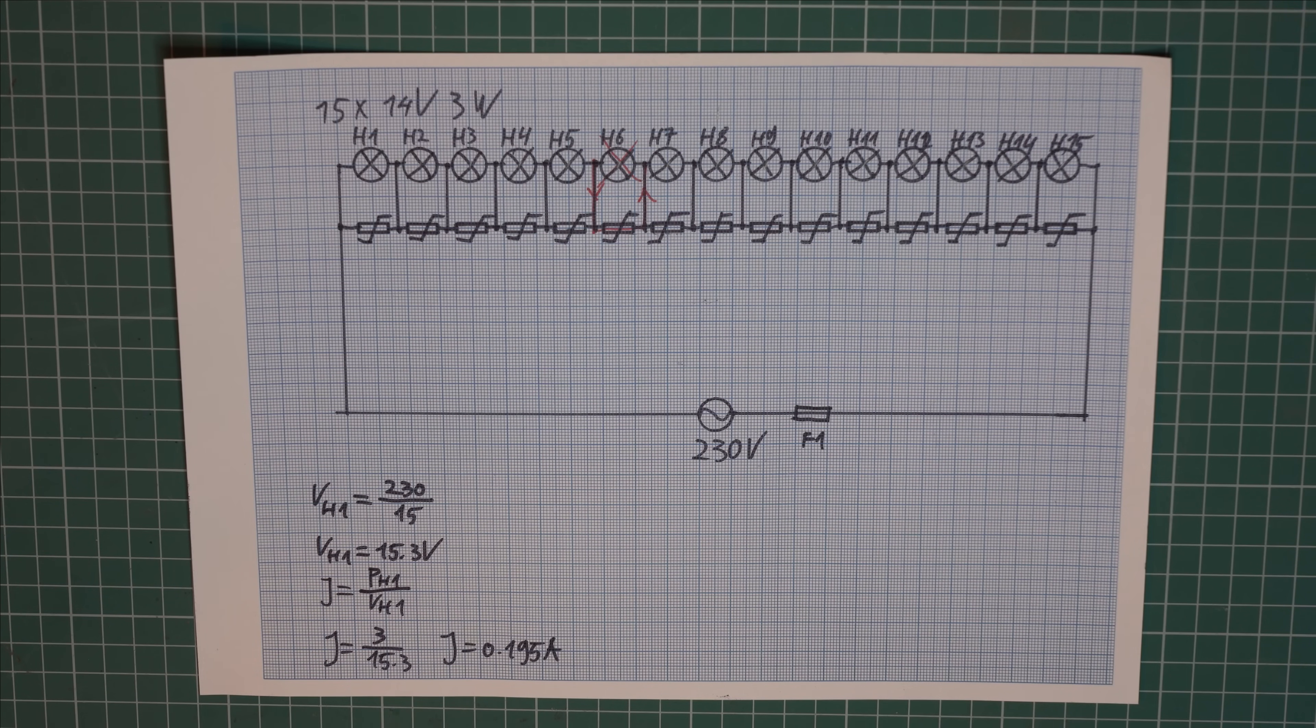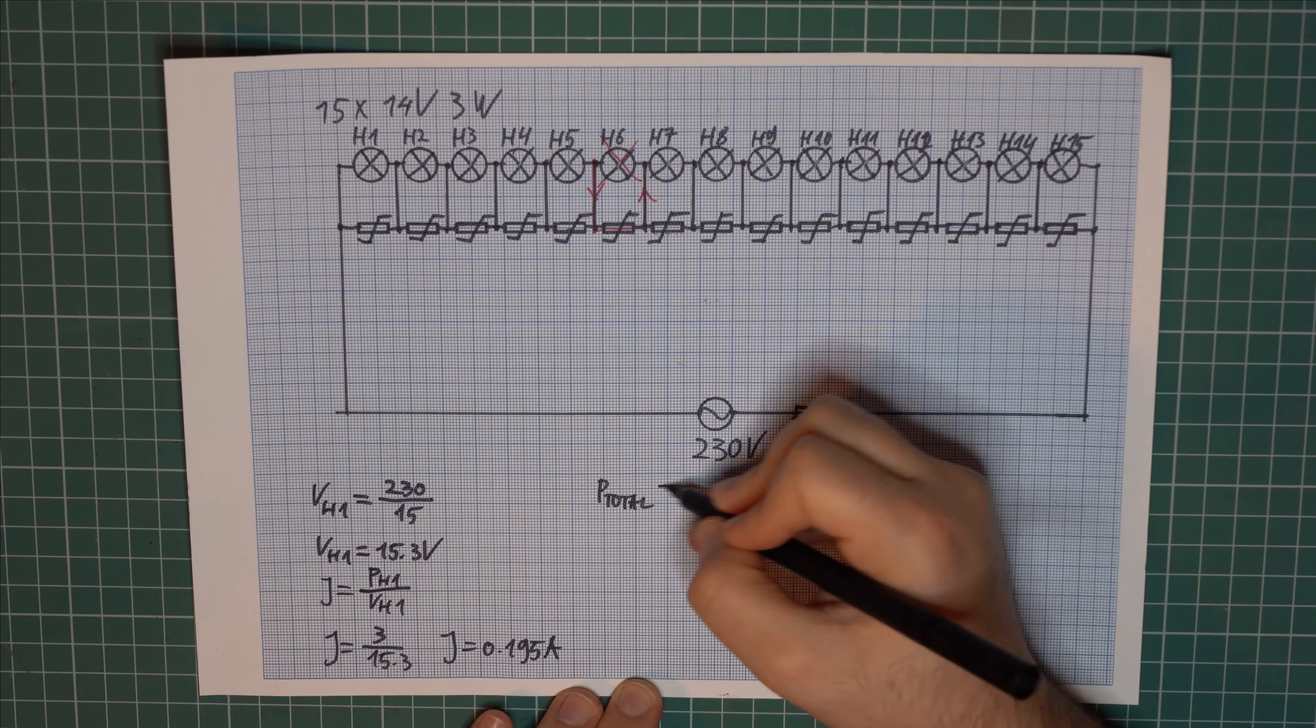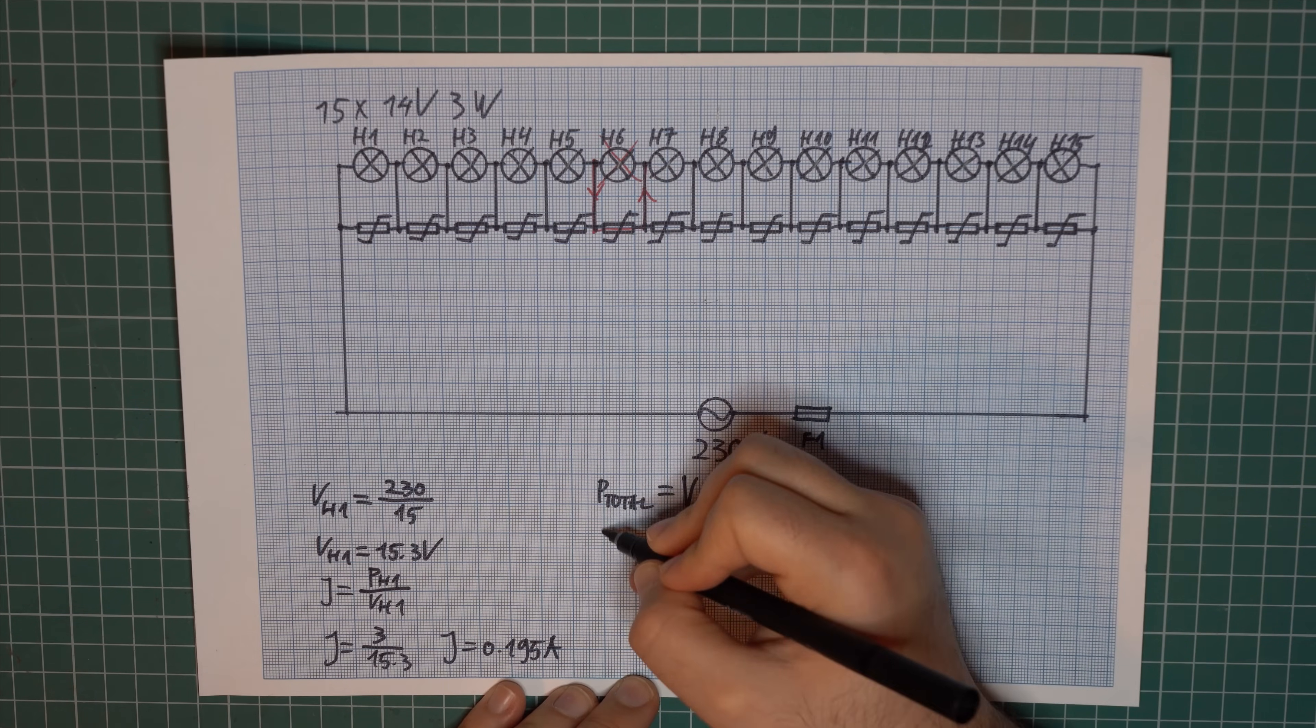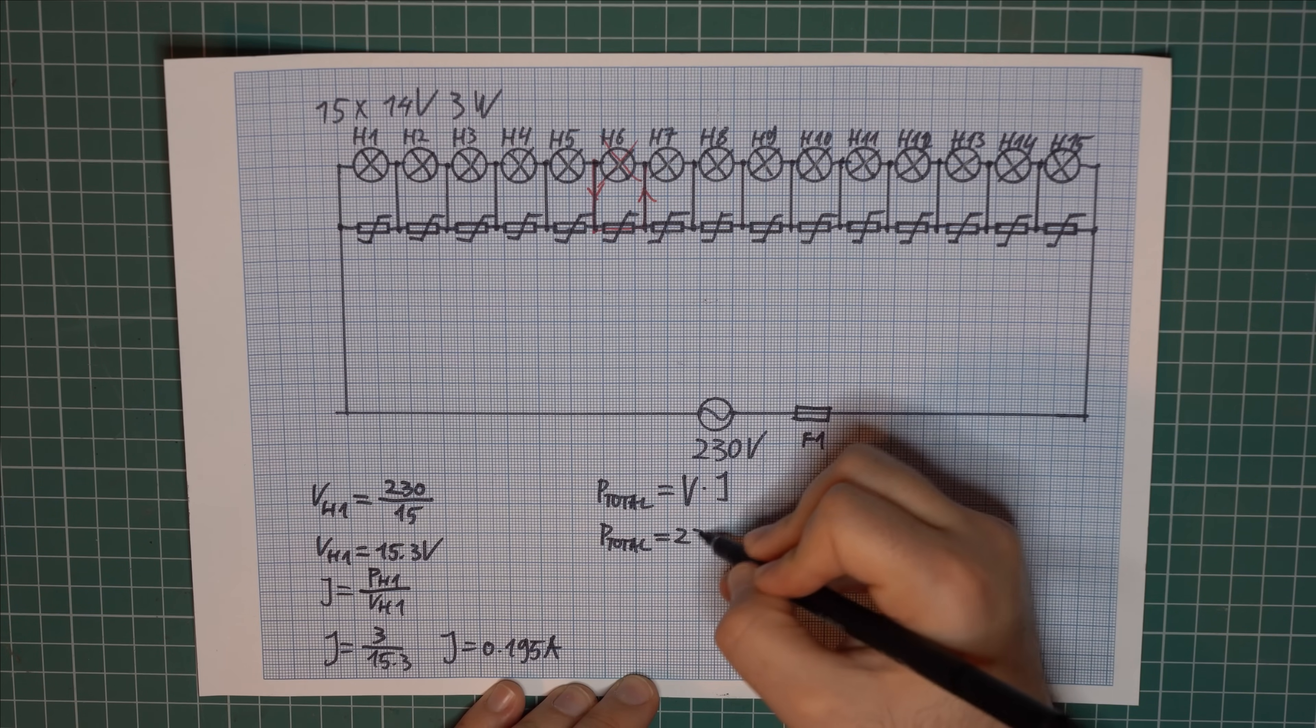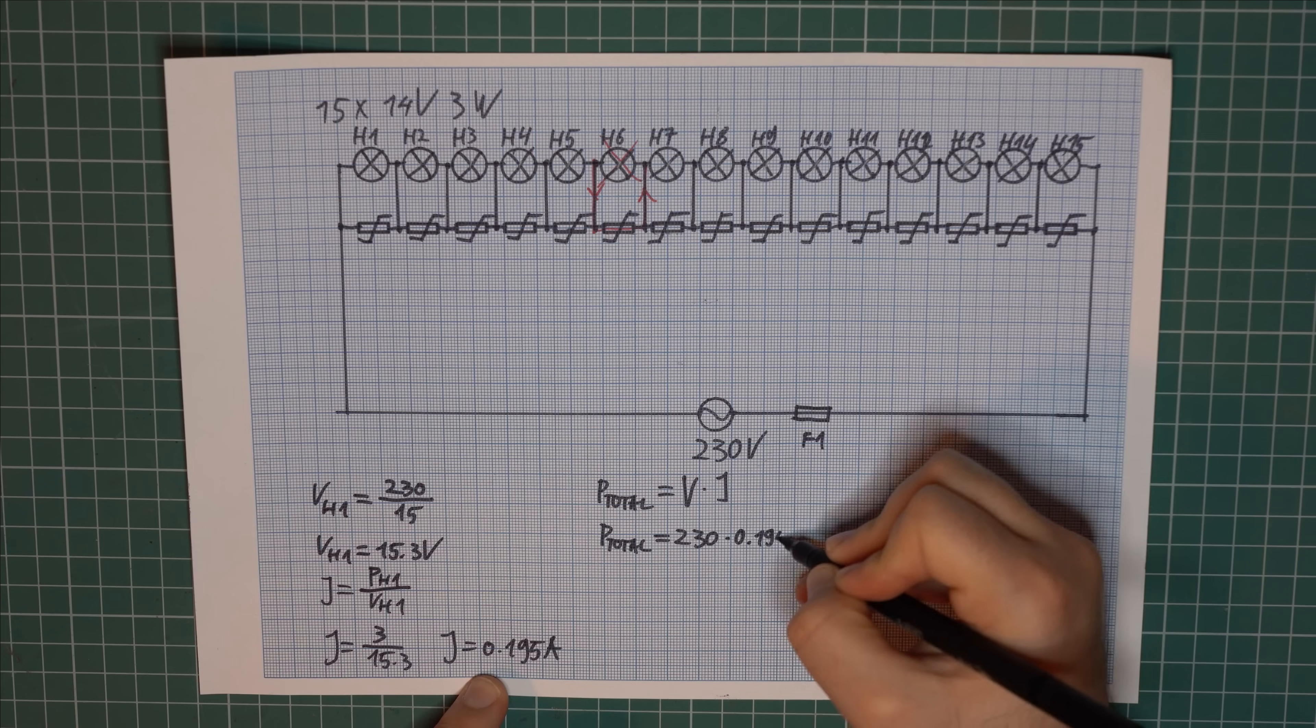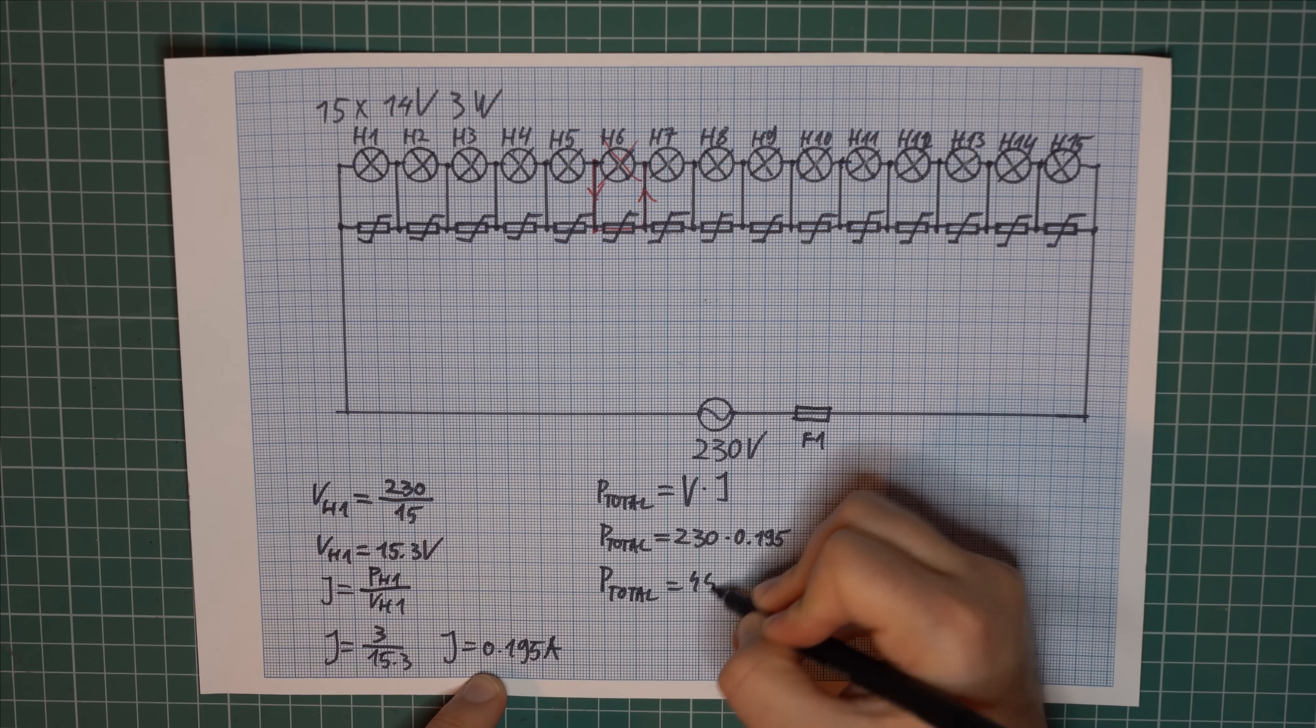And finally let's calculate the total power. The total power equals the total voltage times the current. So the total power is 230 volts multiplied by our current which is 195 milliamps, which gives us a total power of 45 watts.